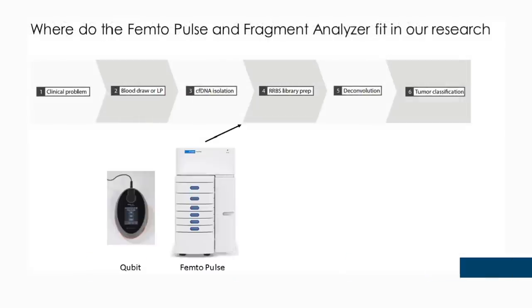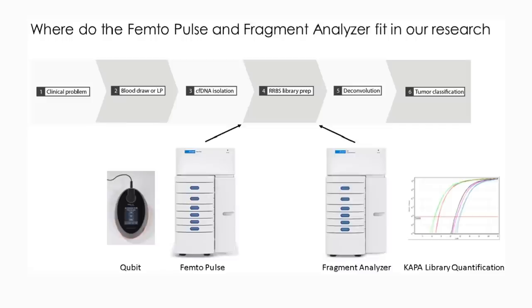The femtopulse is used to perform quality control of our input circulating-free DNA sample, while the fragment analyzer is used to perform quality control of our final sequencing library.